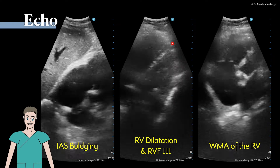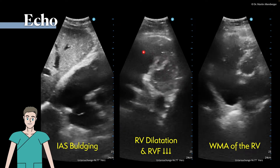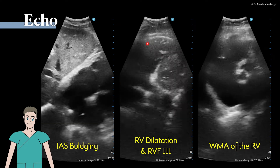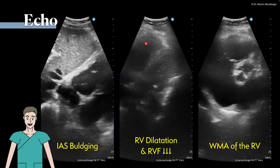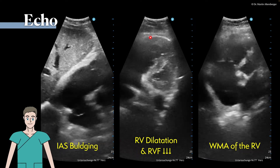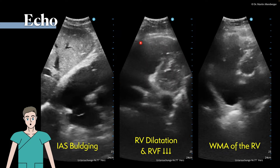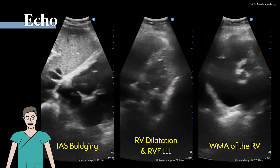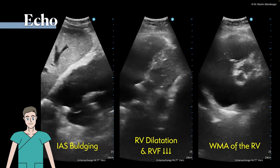We can see that the apical parts are still contracting, whereas the mid-wall, as we can appreciate here, is definitely akinetic.